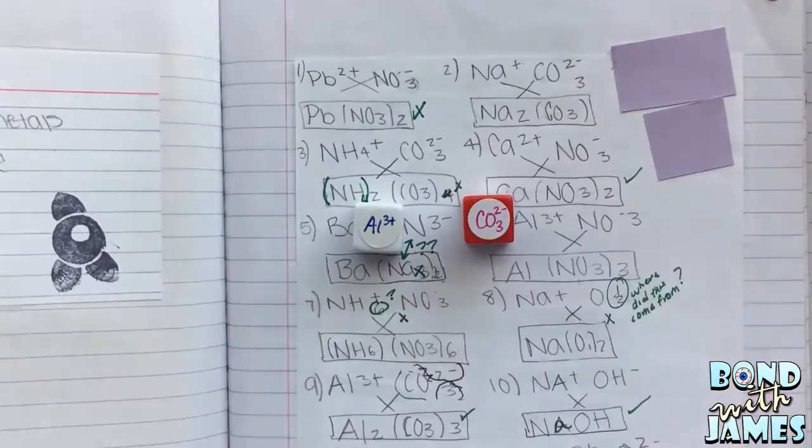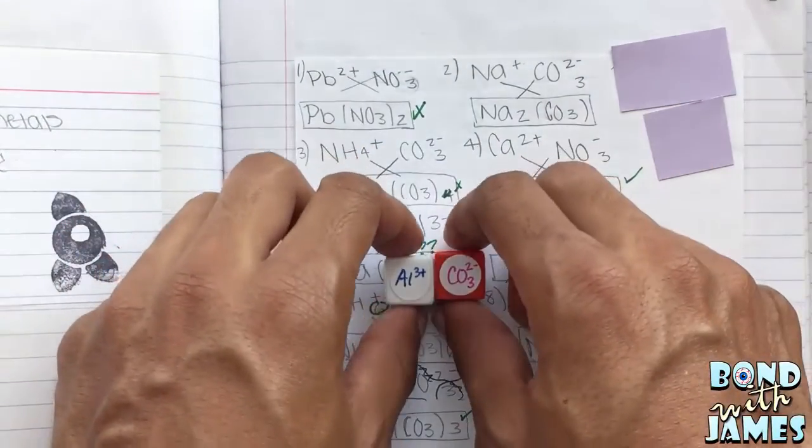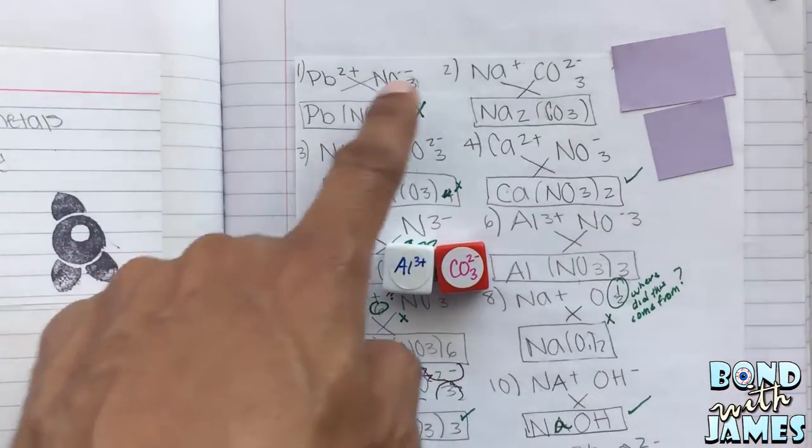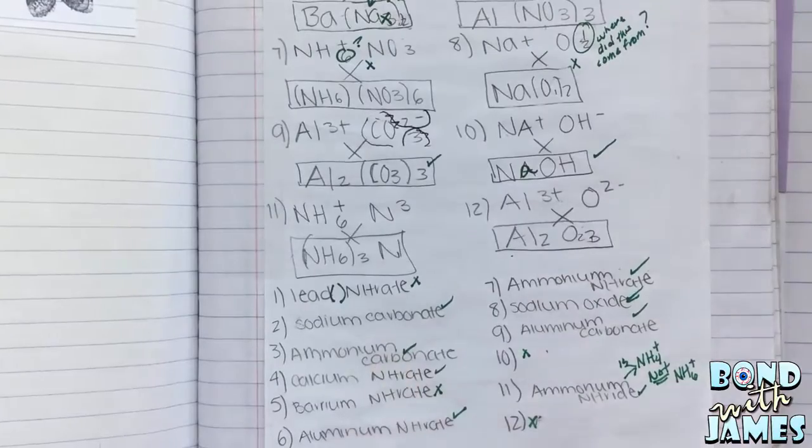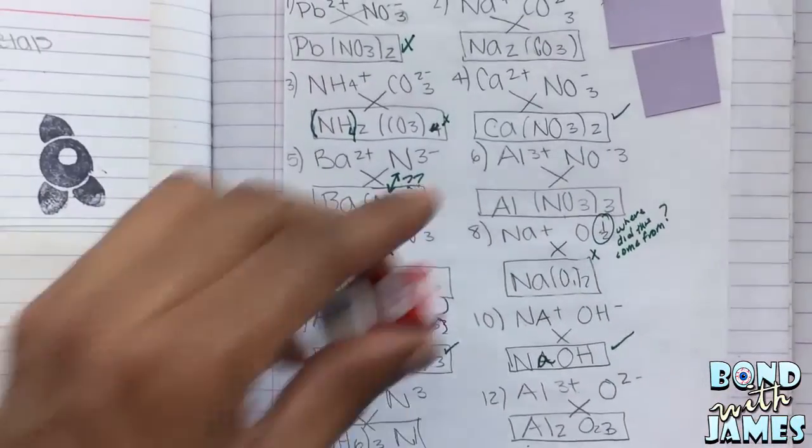I would have a cation and anion version and whatever the student rolled, they had to write the formula for it and they also had to write the name for it.